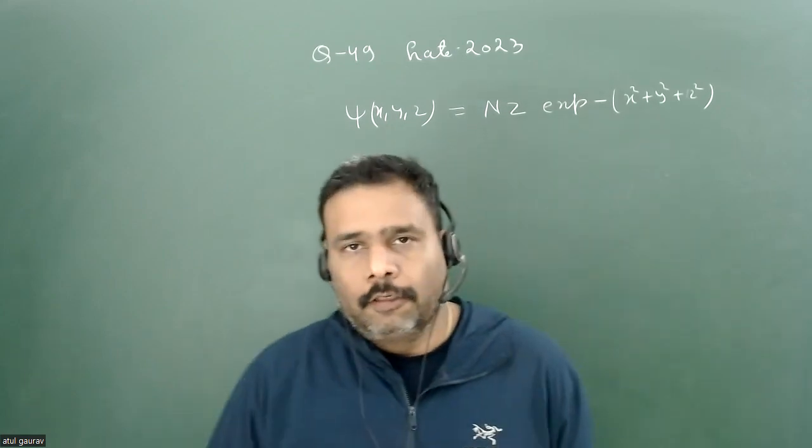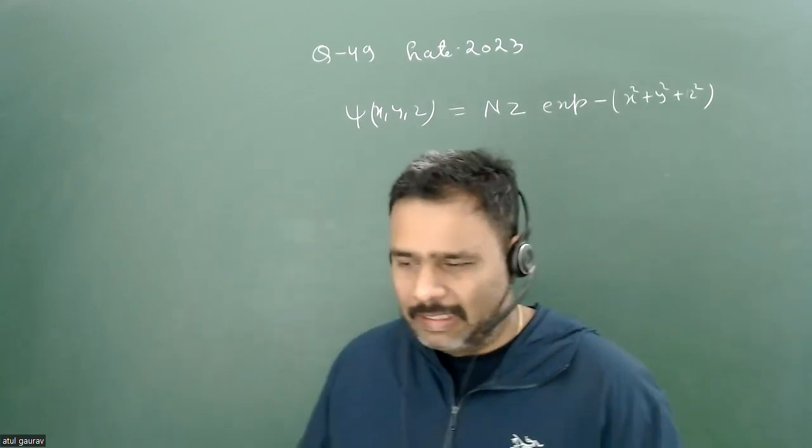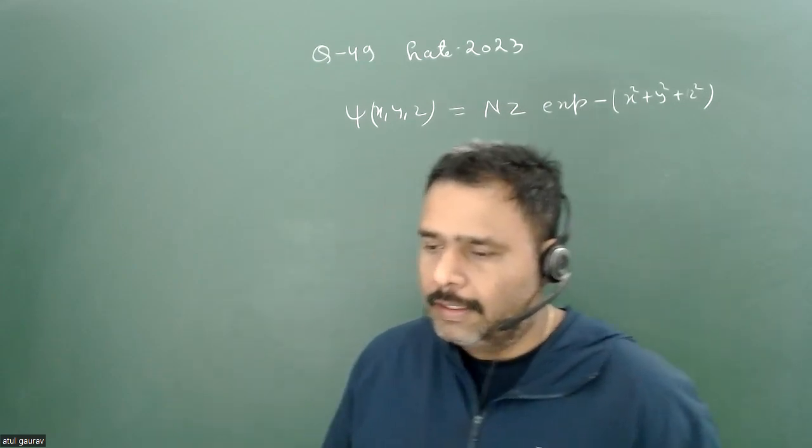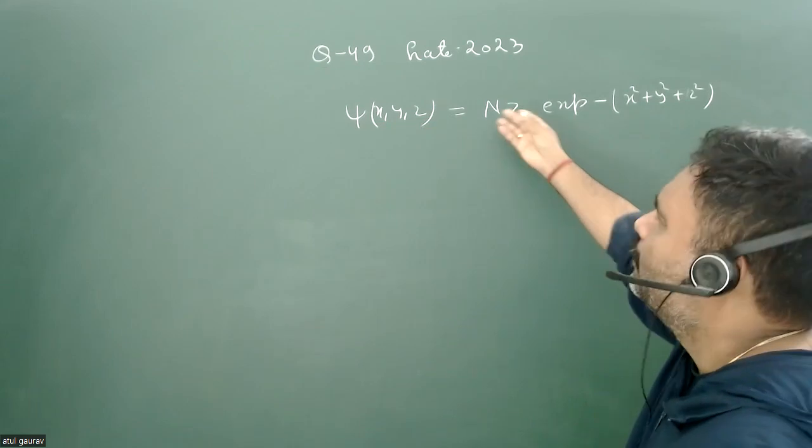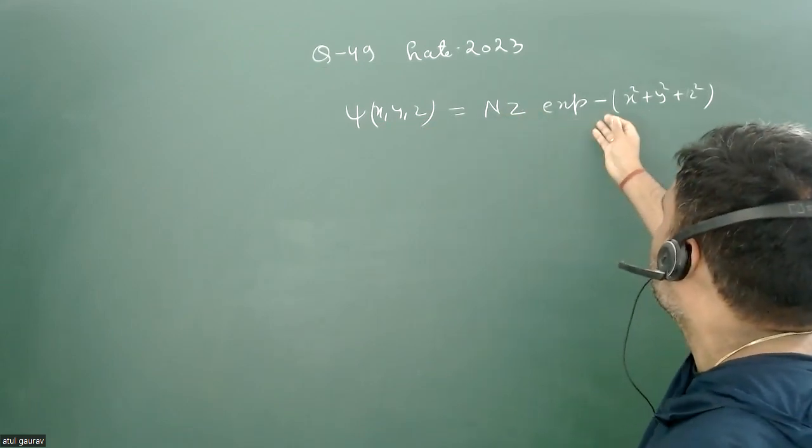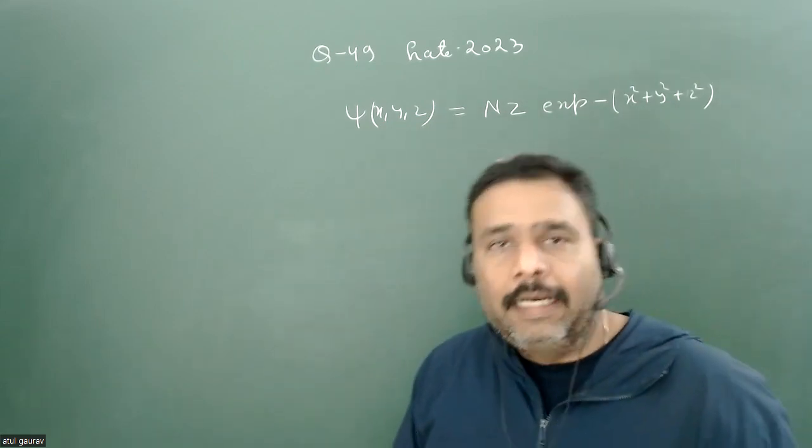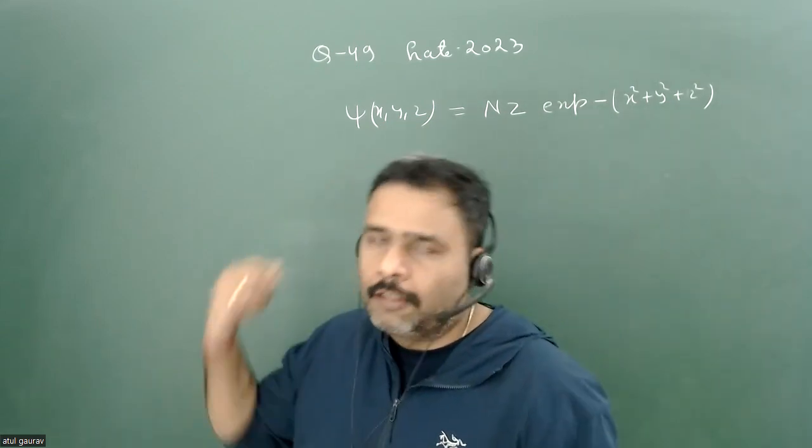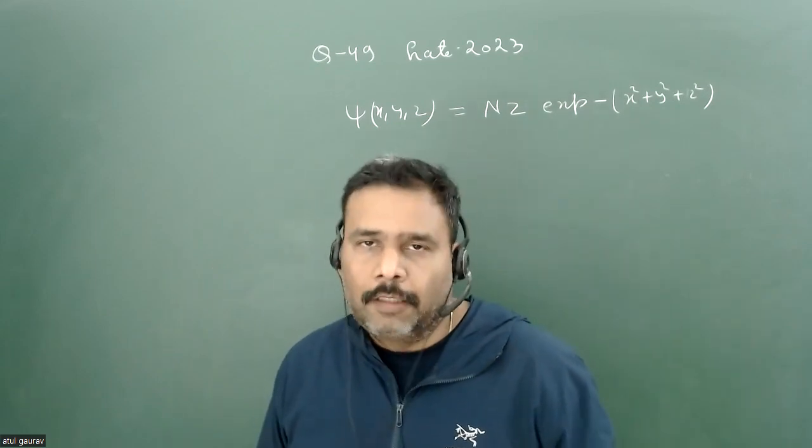Hello, let's try to solve one more problem from quantum mechanics. This is question number 49, a very simple question. What is given is that psi(x,y,z) equals N (some normalization constant) times z times exponential minus (x square plus y square plus z square). If L square and Lz are going to be measured on this state, what will be the measurement? L is the angular momentum operator.